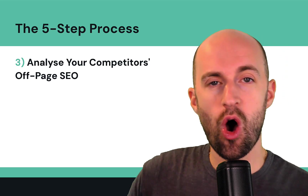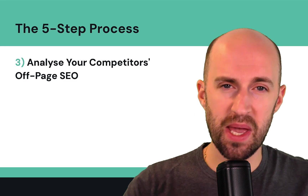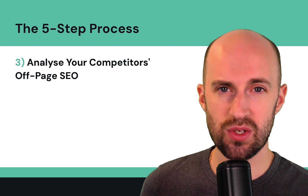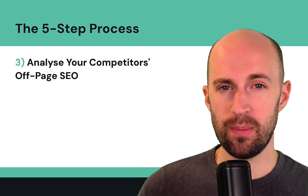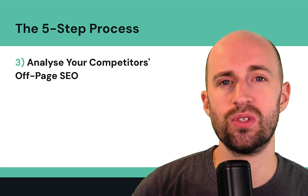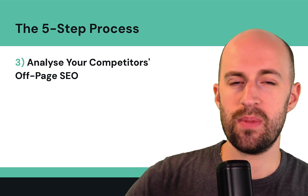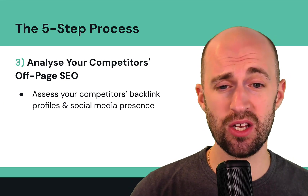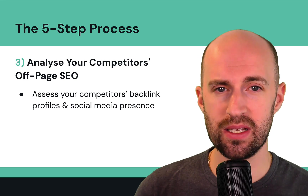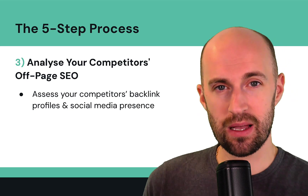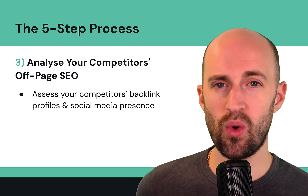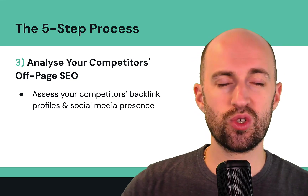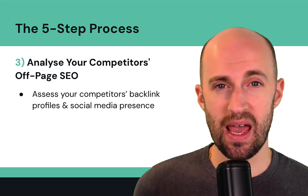Step three is to analyze your competitors' off-page SEO — basically everything to do with SEO outside of the actual site, such as backlinks which are links from other people's websites, social media platforms, forums, and anywhere people are talking about the site outside of it. You want to assess your competitors' backlink profiles and social media presence: how many backlinks they have, from which websites, their domain authority and credibility, which platforms they're on, what following they have, and what type of content they share and how regularly.